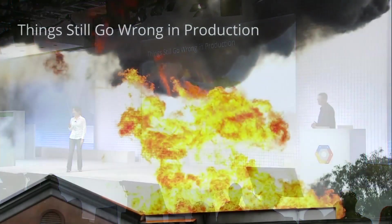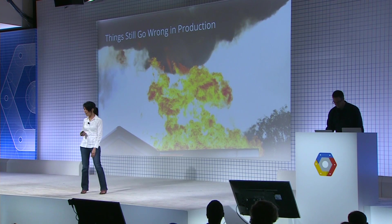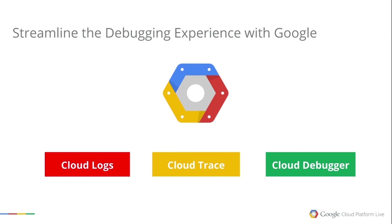When something goes wrong, one person cannot understand the intricate details of every single component in the system. Fortunately, we have powerful internal debugging tools that help us reason about and understand our production system, and we can figure out what's going on pretty quickly. When we started working on the Google Cloud Platform, we wanted to bring these powerful tools to our users to help them understand and debug their production systems.